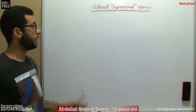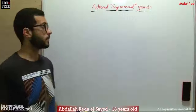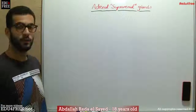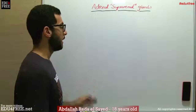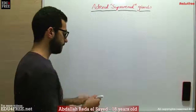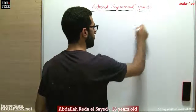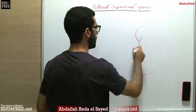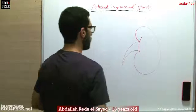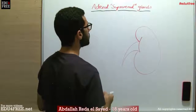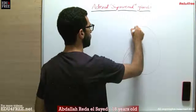Today we are going to talk about the adrenal glands. There are two of these glands, each one located above each kidney. So if we assume that this is the kidney, the location of an adrenal gland will be here.